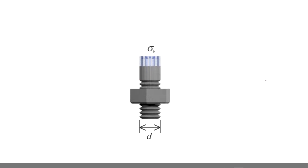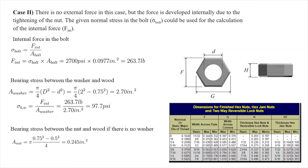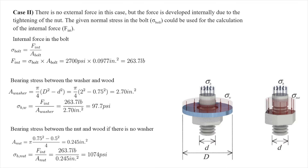Comparing bearing stress when the nut sits directly on the wood board — using dimensions from a hex nut table for a half-inch zinc finish hex nut — the contact area is approximated as a circle with external diameter three-quarters of an inch and internal diameter half an inch: area equals pi over 4 times (three-quarter inch squared minus half inch squared). The bearing stress without the washer is about 10 times higher than with the washer. This emphasizes the importance of washers in bolt connections to avoid stress concentration and local failure in the wood board.